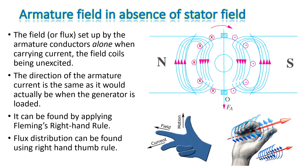Now let us consider the field set up by armature conductors alone when carrying current, with the field coils unexcited. This shows the flux distribution assuming there is no stator or main field, with the armature current direction the same as it would actually be when the generator is loaded. This can be found using Fleming's right-hand rule, and the flux distribution can be found using the right-hand thumb rule. The currents are coming outward from the plane of the diagram on one side, and going inside on the other, giving the armature flux distribution shown.